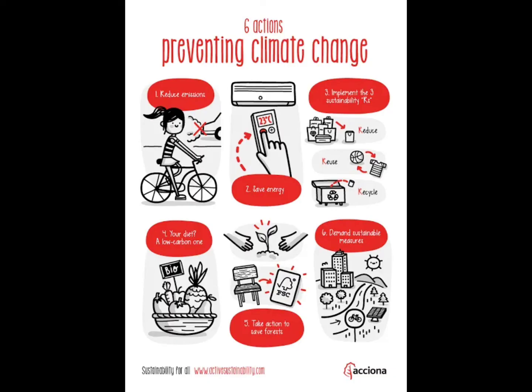So what could you do to combat climate change? These are the six actions to combat climate change. First, reduce emissions. Save energy. Implement the three sustainability principles in your diet — adopt a low-carbon one. Take action to save forests. Demand sustainability measures.